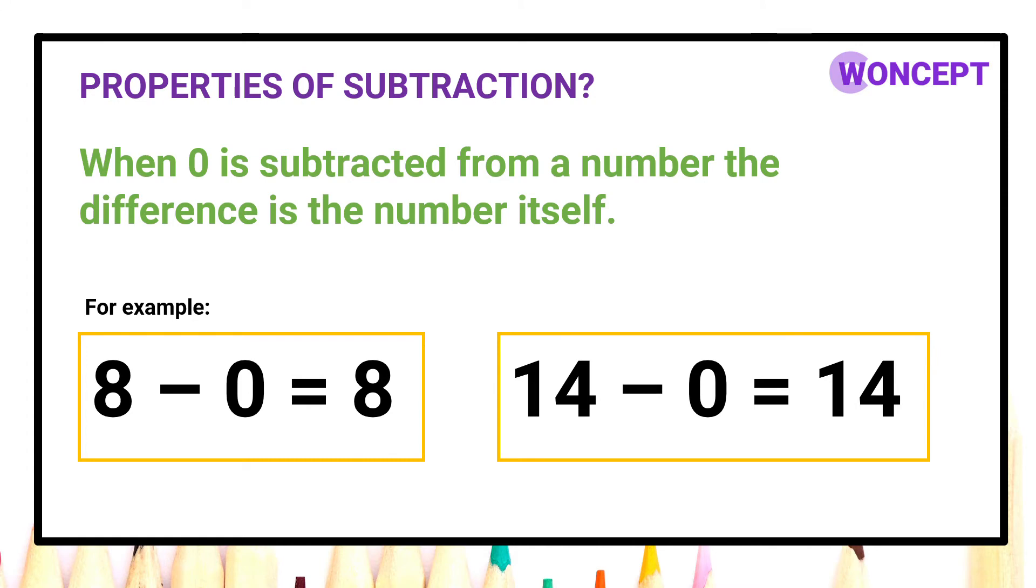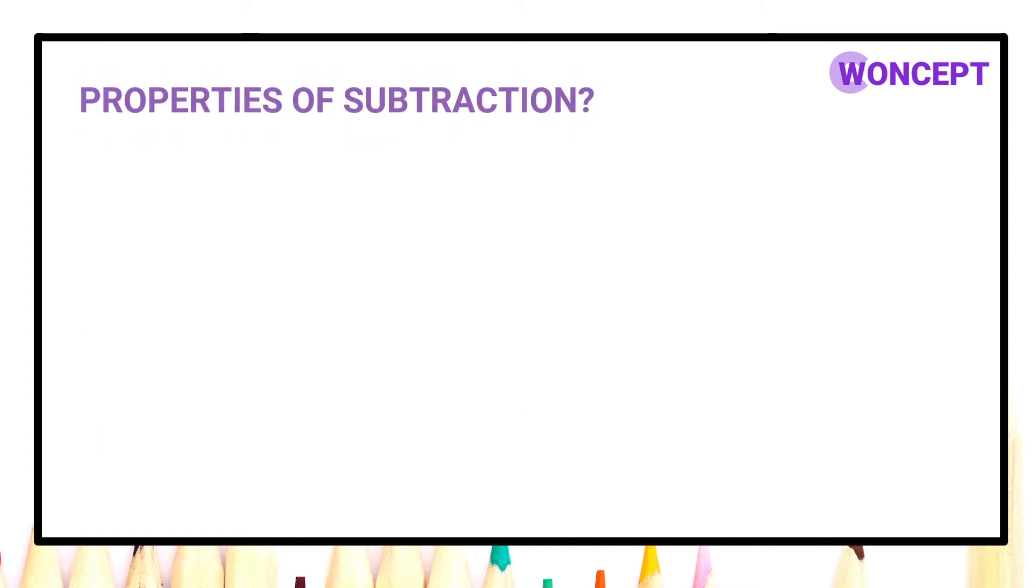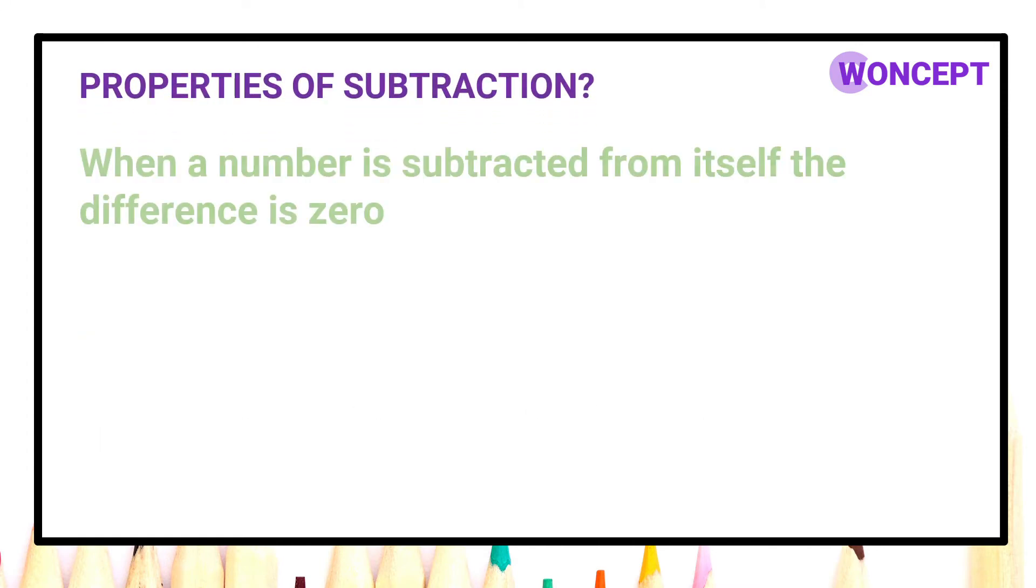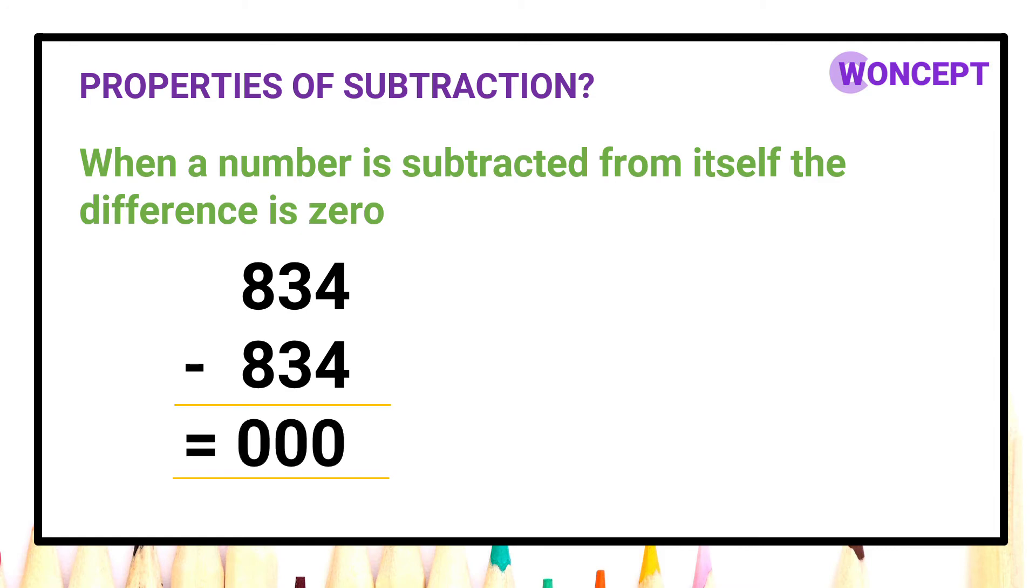Let us move to another property of subtraction. When a number is subtracted from itself, the difference is 0. Let us take an example. 834 minus 834. What should be our answer? You are right. We get 0. 0 is the difference here.